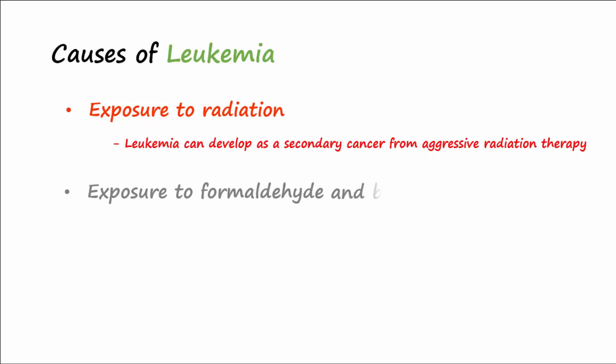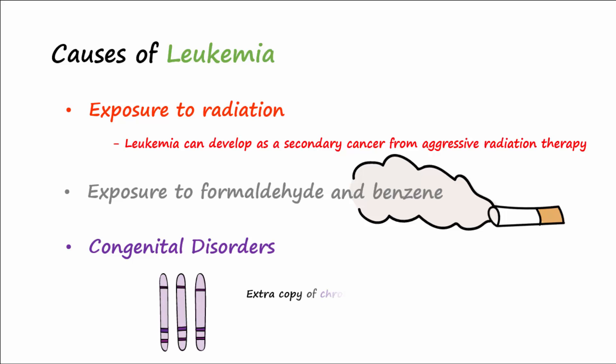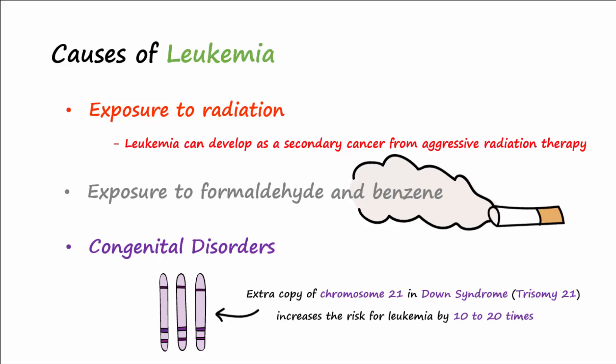Chemicals like formaldehyde and benzene, which is found in cigarette smoke and gasoline, can bring about changes in genes. The risk of developing leukemia is also increased in individuals with certain congenital disorders. This is especially true for people with Down syndrome, also known as trisomy 21. Those with Down syndrome have three copies of chromosome 21 instead of just two, and this overexpression of genes increases the risk of developing leukemia up to 10 to 20 times compared to that of the general population.